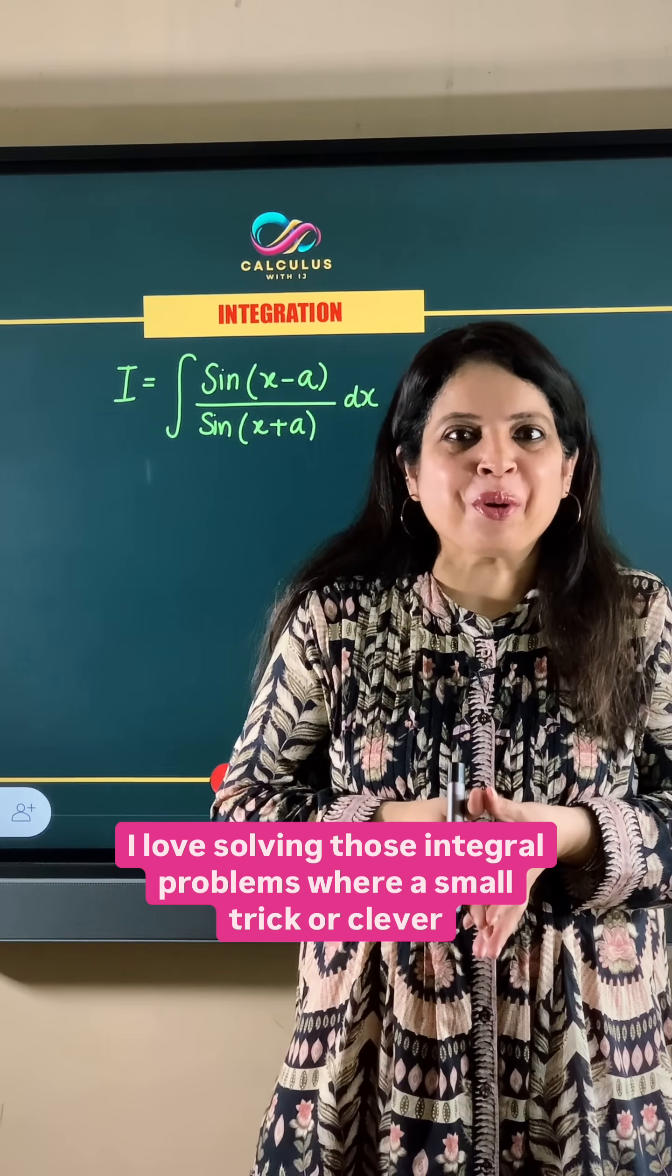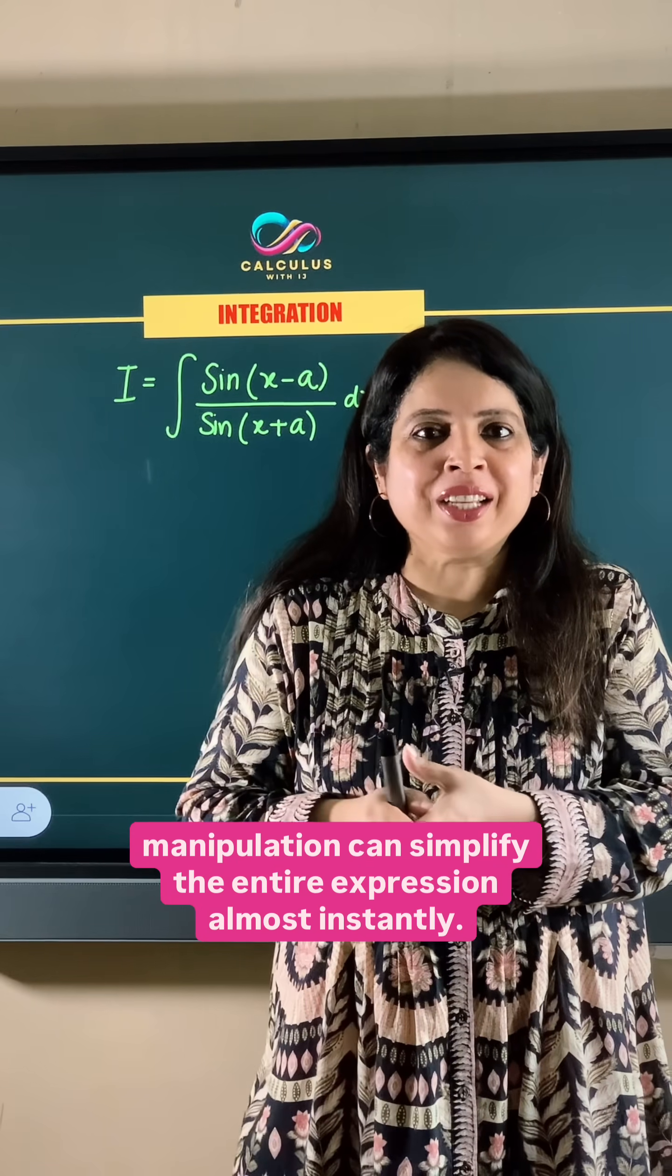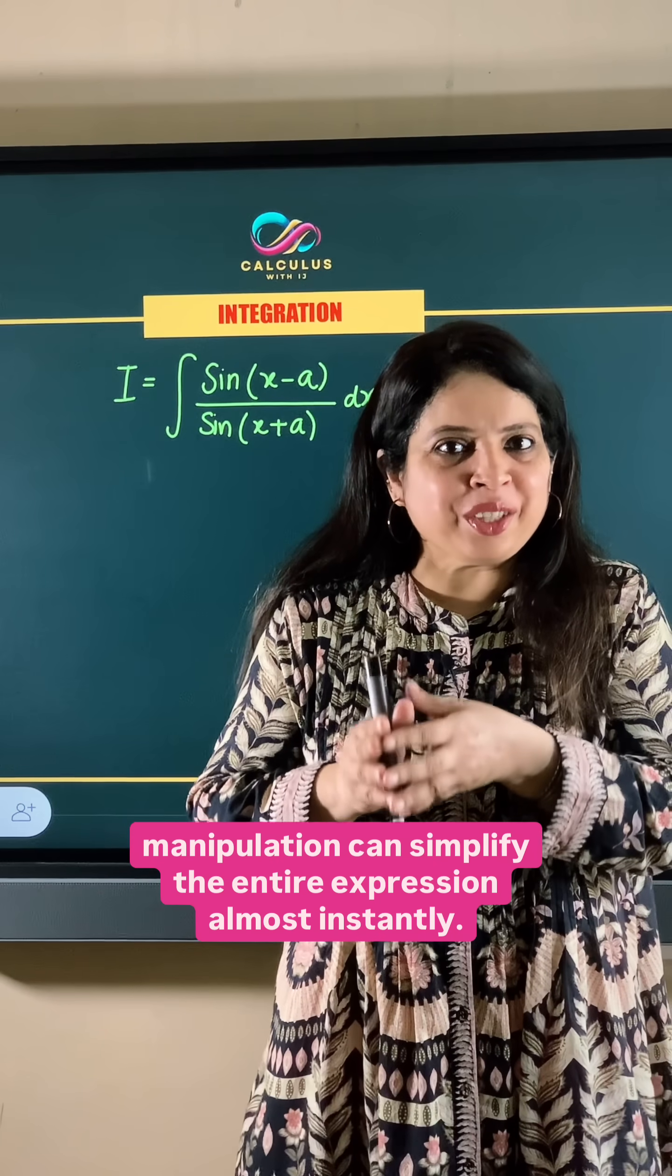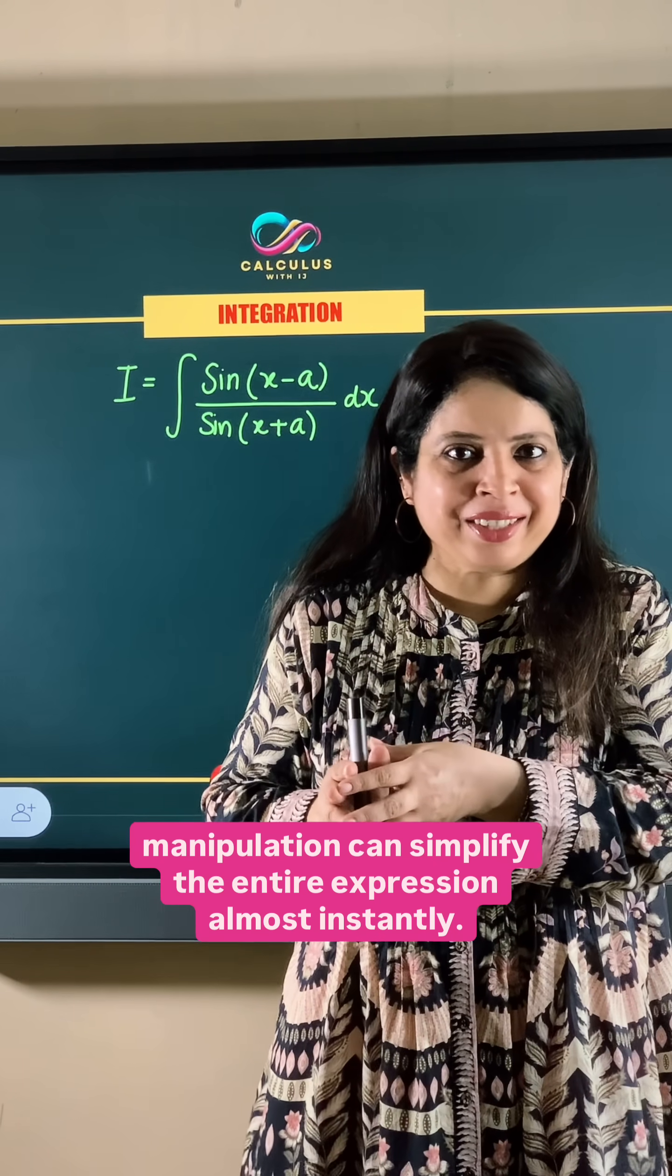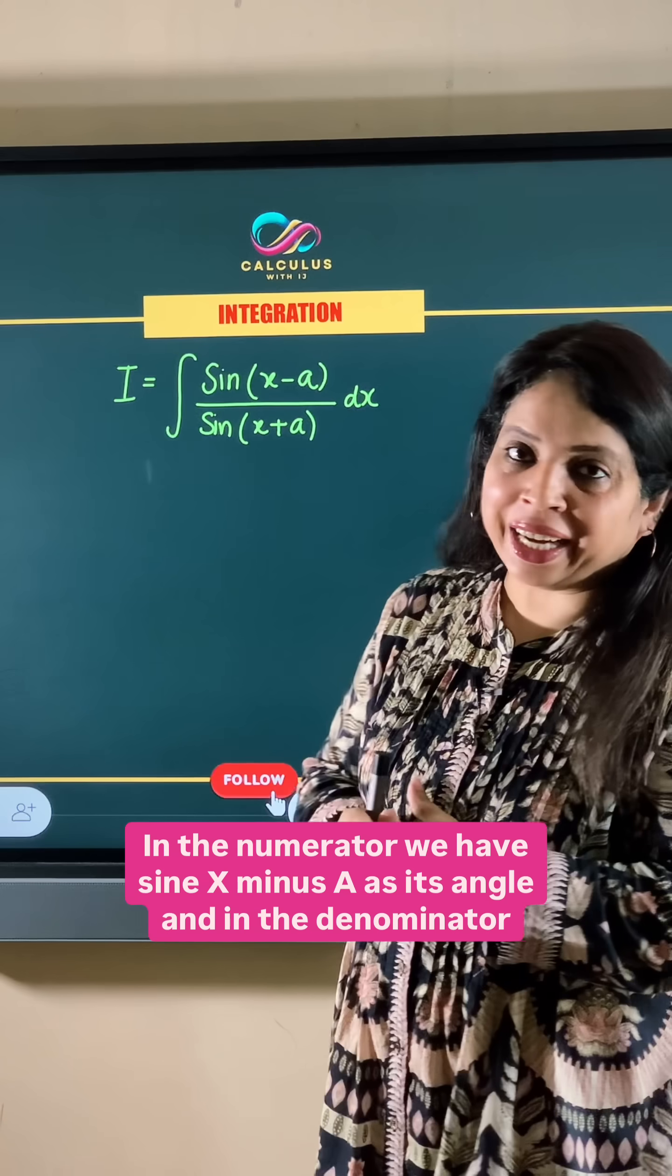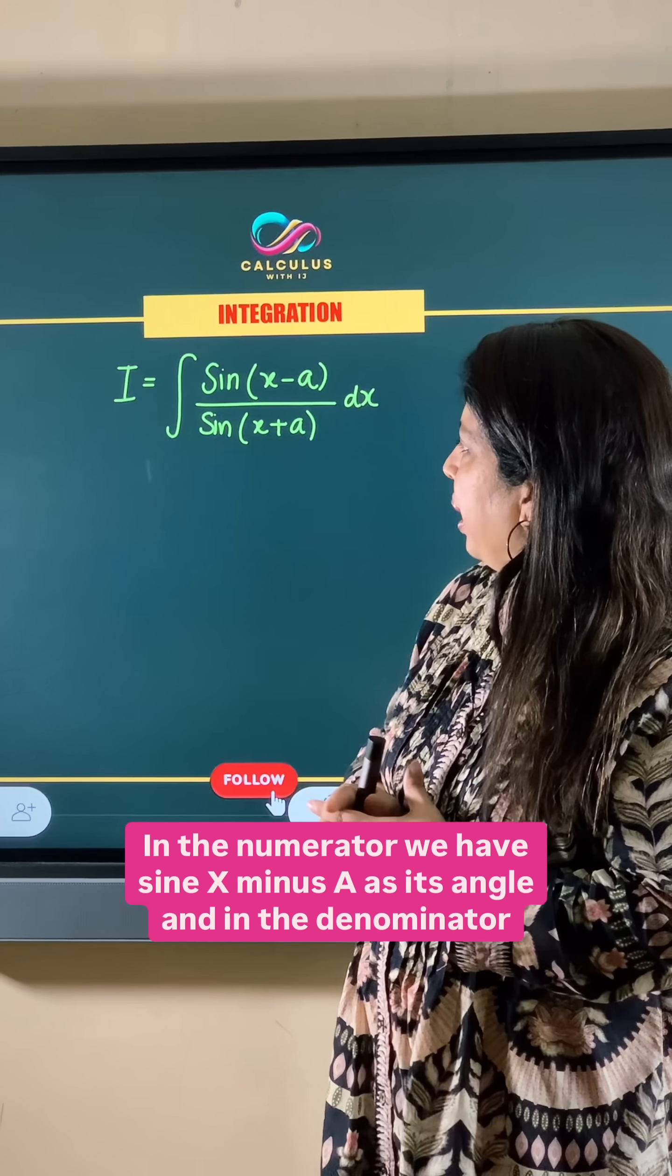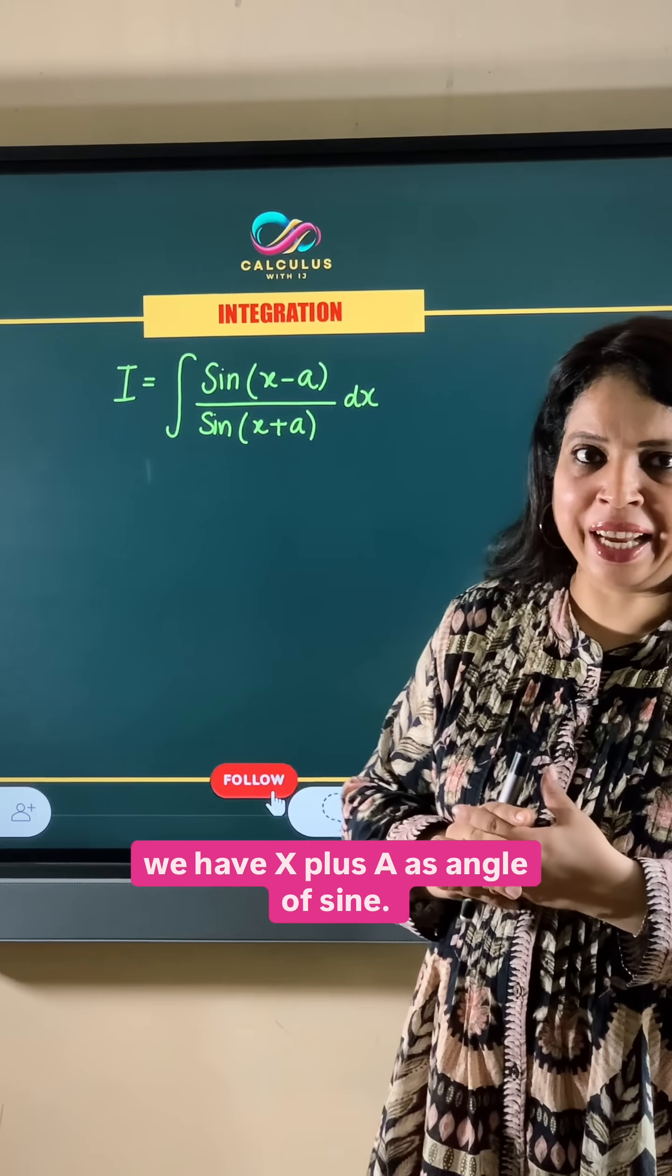I love solving those integral problems where a small trick or clever manipulation can simplify the entire expression almost instantly. So this is one of those problems. In the numerator we have sine x minus a as its angle, and in the denominator we have x plus a as angle of sine.